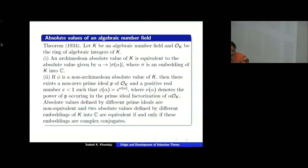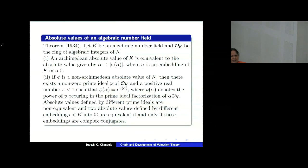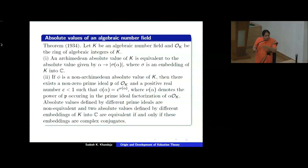It was Emmy Noether who introduced a special class of rings, which we now call Dedekind rings. She named them 'Fünf-Axiom-Ringe' — five axiom rings. These are rings in which every non-zero ideal can be uniquely written as a product of prime ideals. There are more than a dozen characterizations known of Dedekind domains.